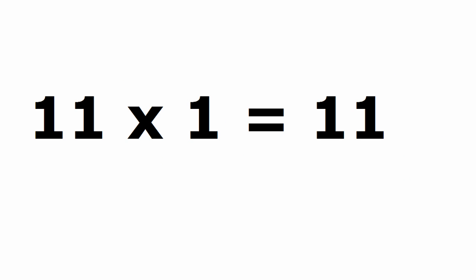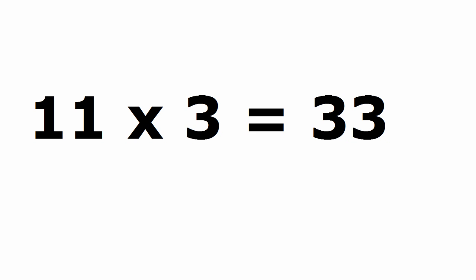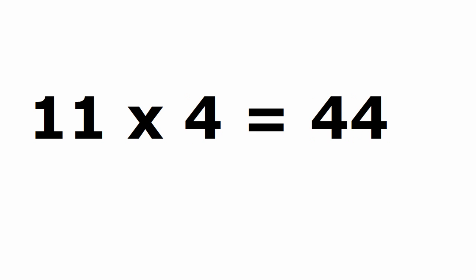Eleven times one is eleven. Eleven times two is twenty-two. Eleven times three is thirty-three. Eleven times four is forty-four.